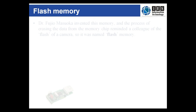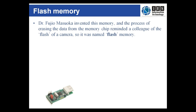Working for Toshiba in the early 1980s, Dr. Fujio Matsuoka invented flash memory. It became known as flash memory because one of Dr. Matsuoka's colleagues said that the process of erasing data from the memory reminded him of the flash of a camera, and the name stuck.